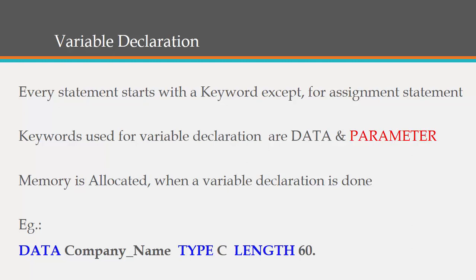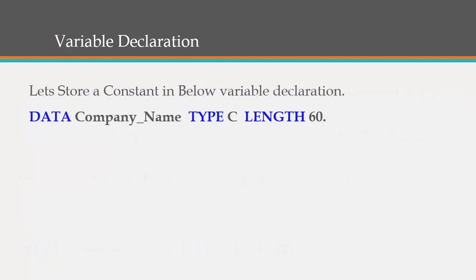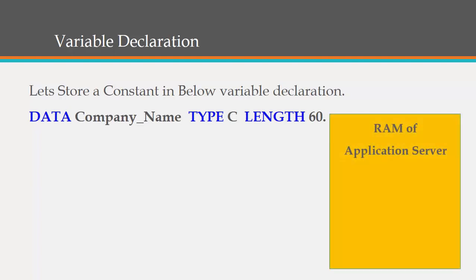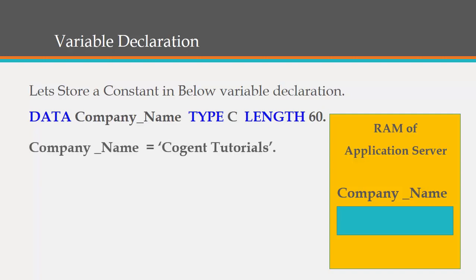This is how we define a variable declaration. The other way is through PARAMETERS — in the backend, SAP creates a selection screen where an end user gives a value through the keyboard and it is stored in that variable. Memory is allocated when a variable declaration is done. For example, DATA company_name TYPE C LENGTH 60 — as soon as this statement is executed, the RAM of the application server reserves some bytes of memory and assigns the name company_name with length 60. When the next statement is executed — company_name = 'Cogent Tutorials' — that value is stored in the reserved location.